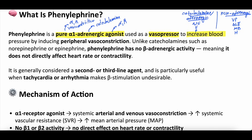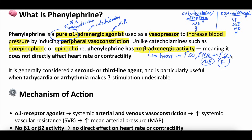Phenylephrine is used as a vasopressor to increase blood pressure by inducing peripheral vasoconstriction. Unlike catecholamines such as norepinephrine and epinephrine, phenylephrine has no beta-adrenergic activity — it's a pure alpha-1. Beta-adrenergic activity affects the heart and leads to increases in contractility and heart rate, which can lead to increased cardiac output. Norepinephrine, although small, does have some beta activity, and epinephrine has a fair amount. So phenylephrine does not directly affect heart rate or contractility, though it might have some negative indirect effects.